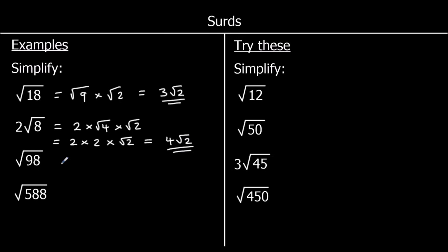Root 98 is a bit harder. What square number is a factor of 98? 98 is 2 times 49. So root 98 can be written as root 49 times root 2. Root 49 is 7, so it's 7 root 2.